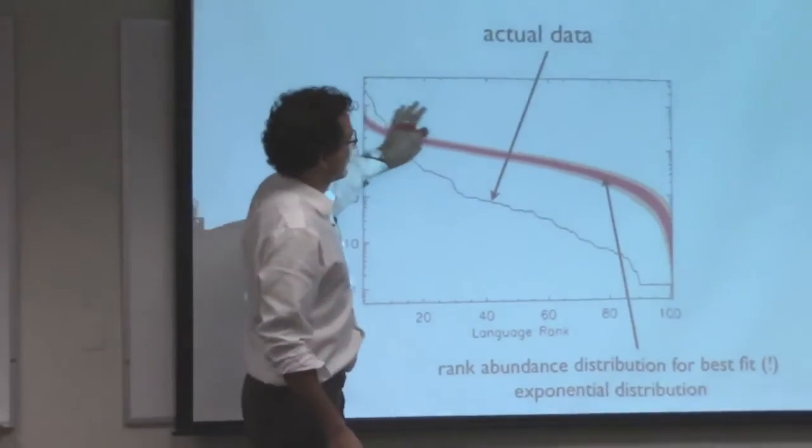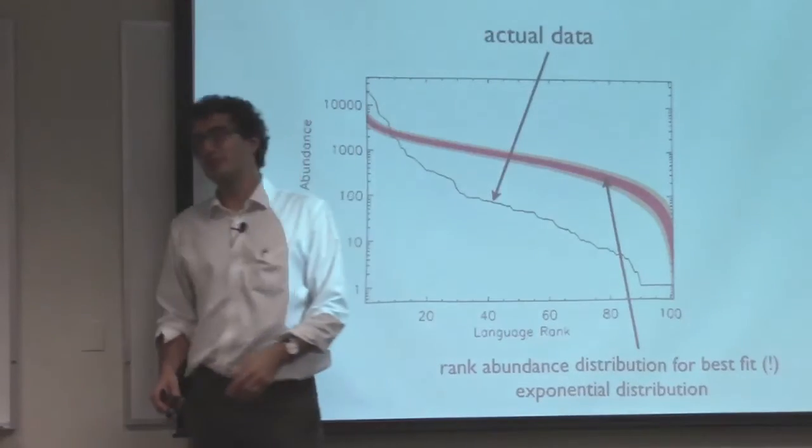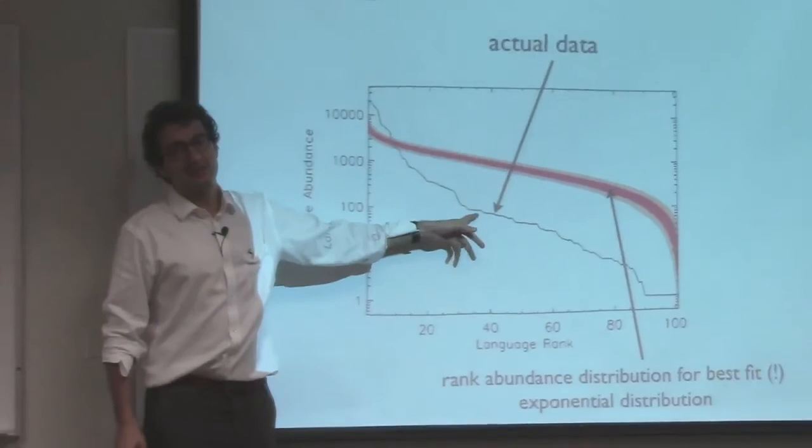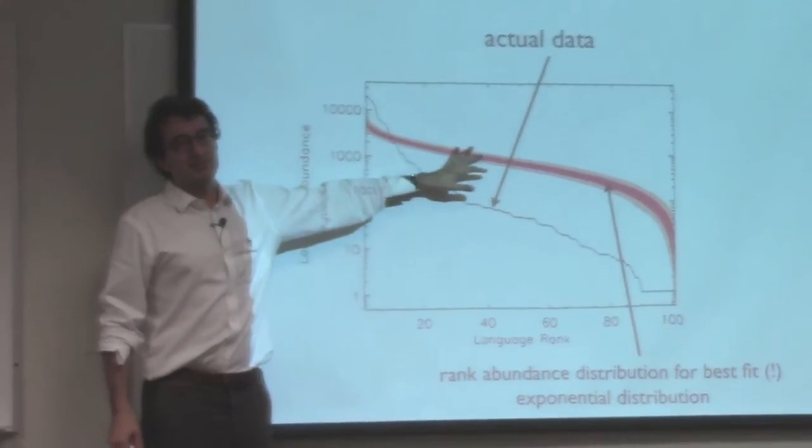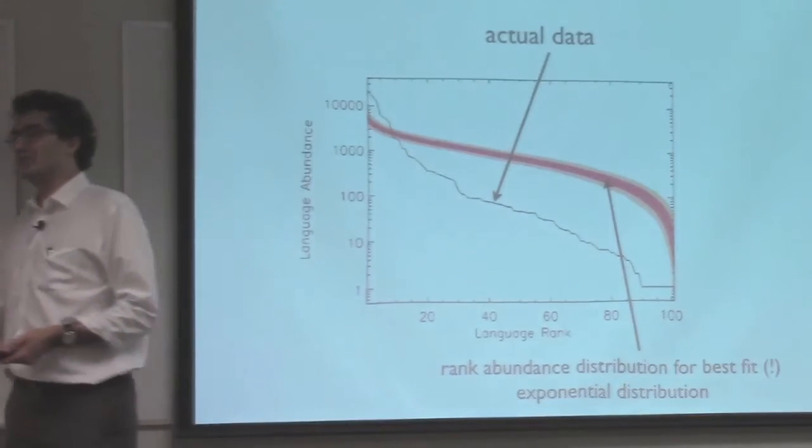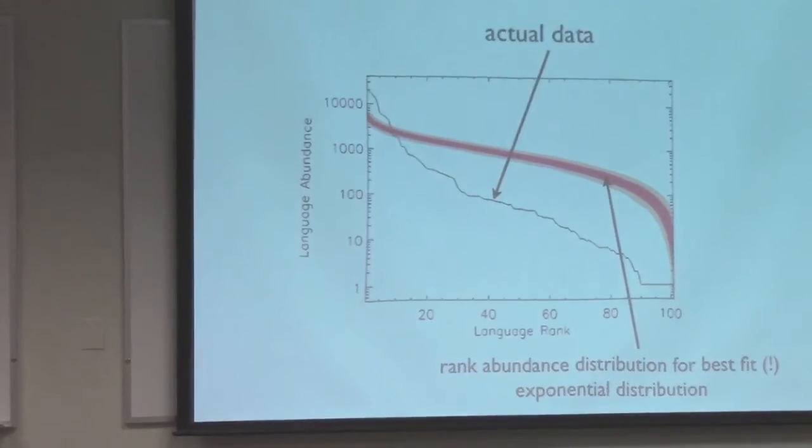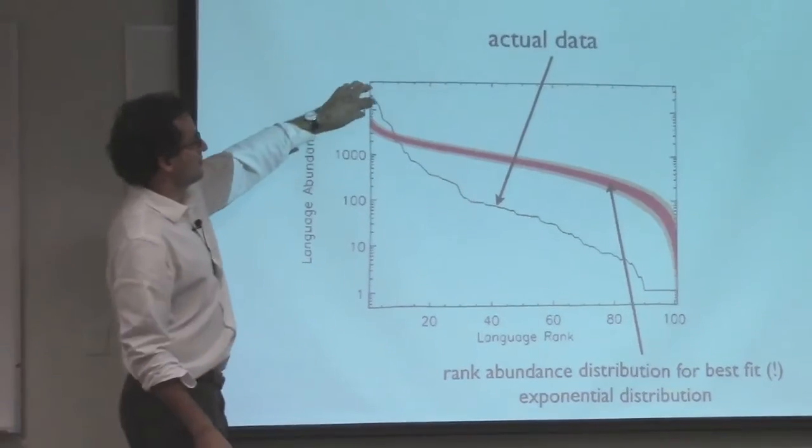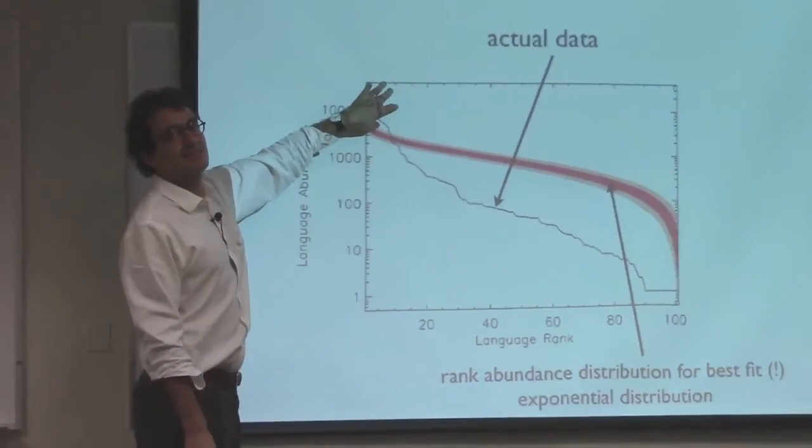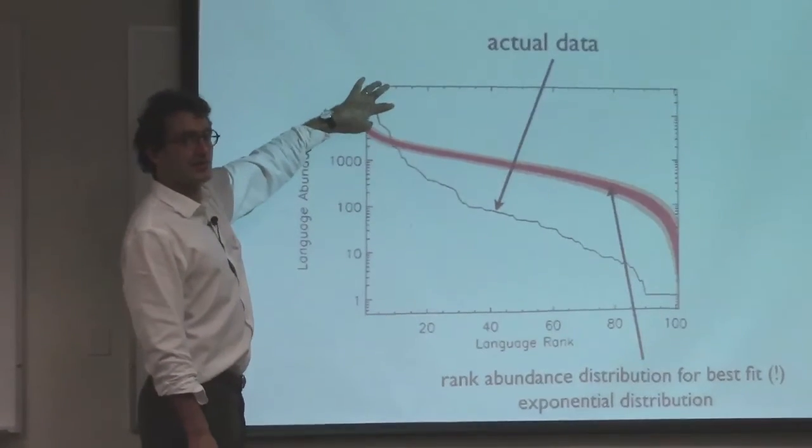This red band here is the one and two sigma contours for the rank abundance distribution. And all I want you to see on this graph is that this is an incredibly bad fit to this. The maximum entropy distribution with this constraint does not reproduce the data. It's not capable of explaining or modeling the data in any reasonable way.